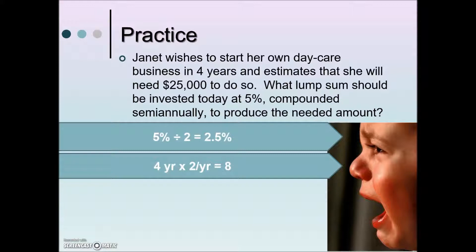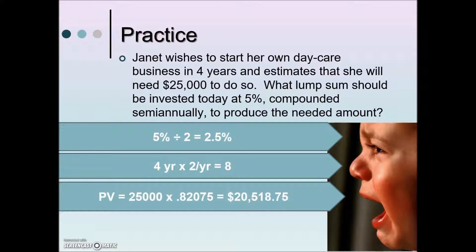We will look up the value from the table from the intersection of these two numbers that we've calculated. You should find 0.82075 is the intersection of our i and our n value. Multiply it by the future value to give us the goal, or the present value, to arrive at that goal: $20,518.75.